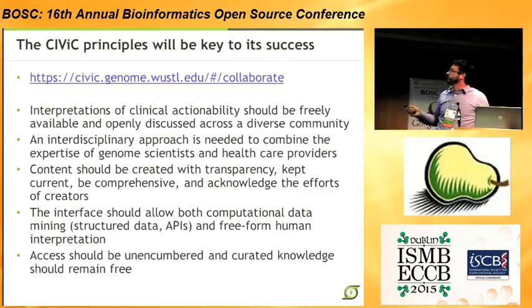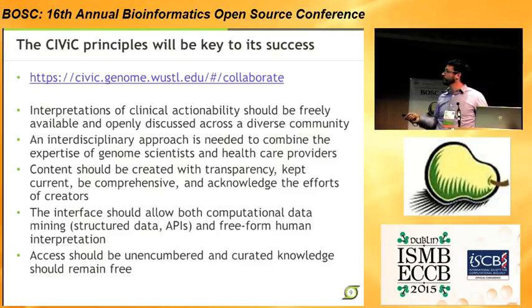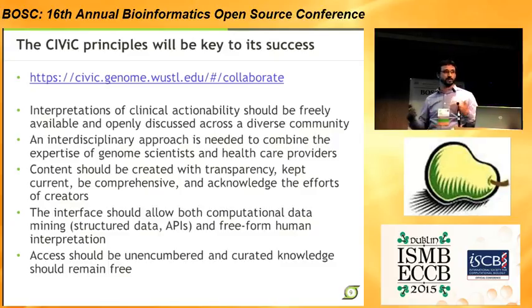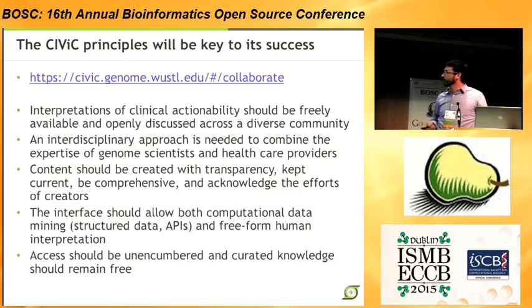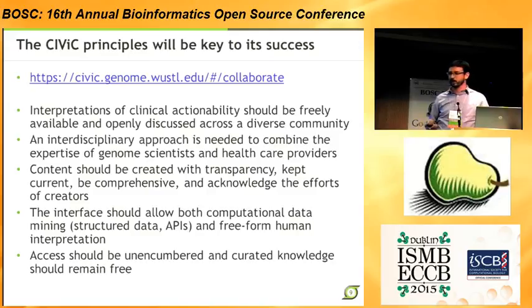We're hoping these principles will be key to CIVIC's success. The interpretations should be freely available and created by open discussion across a diverse community, since the clinical relevance of a variant is often quite debated. We're looking for an interdisciplinary approach — there's complicated genomics here, but it's also medicine, so we need oncologists and genomicists working together on this problem. Above all, the content needs to be comprehensive, created with transparency, kept up to date. The interface should allow both computational data mining and be intuitive and easy to use for people at the web interface. And we want access to remain unencumbered so that the curated knowledge doesn't get closed off a year down the road.